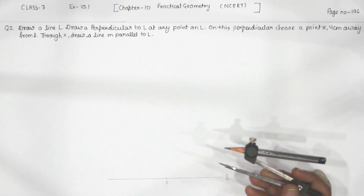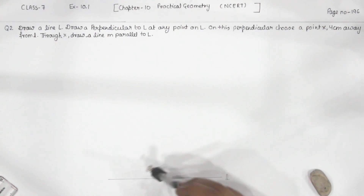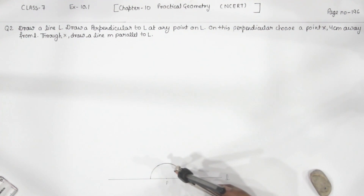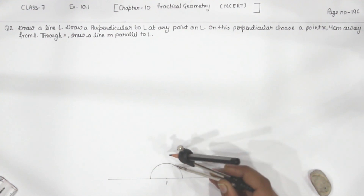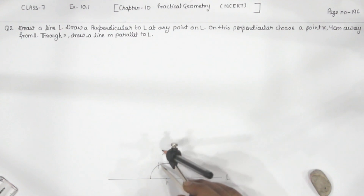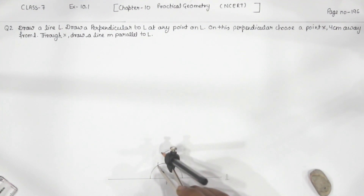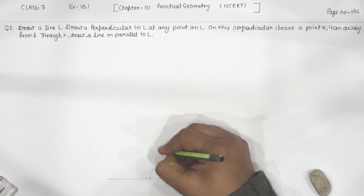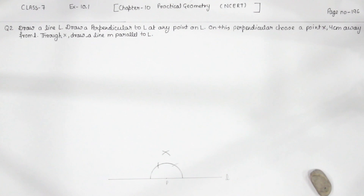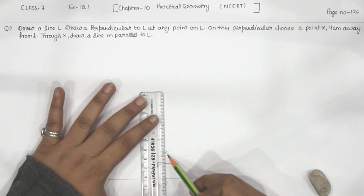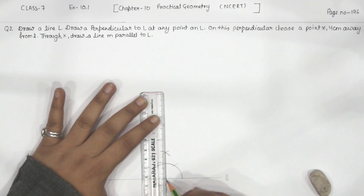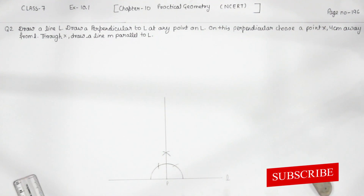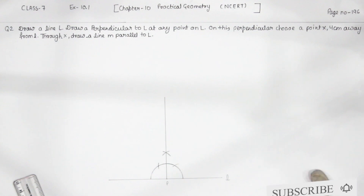We are going to take the compass with any radius and draw an arc. Now this is the perpendicular. We are going to join this one to the point P on the line segment L. This is the perpendicular. Now we are going to take this perpendicular of 4 cm.